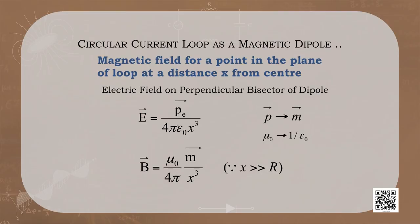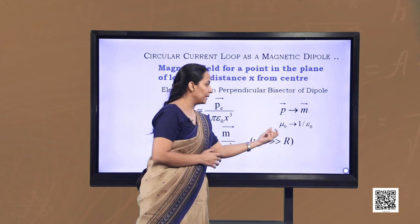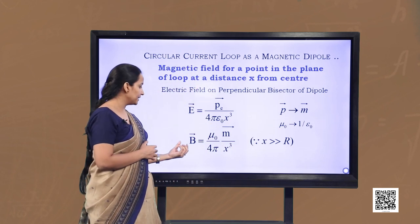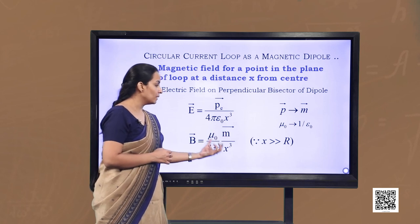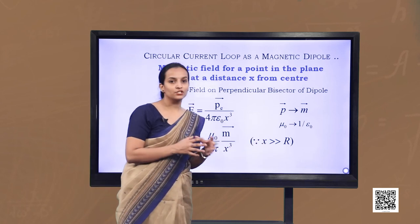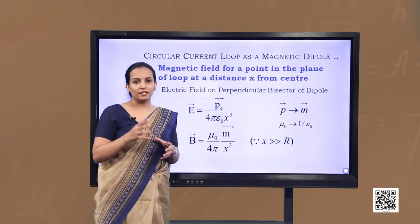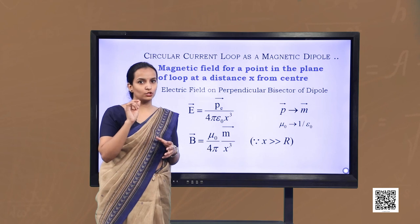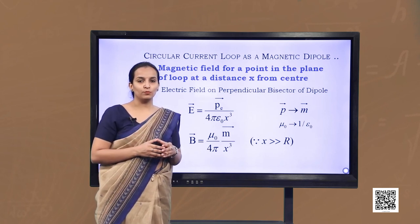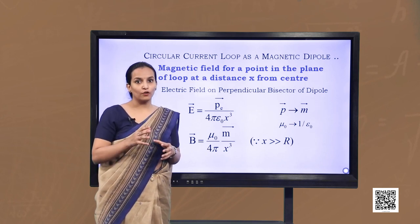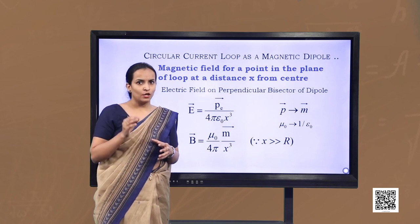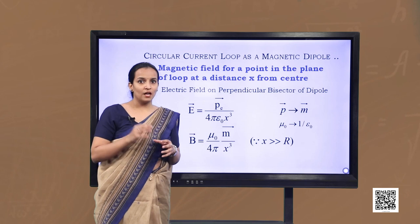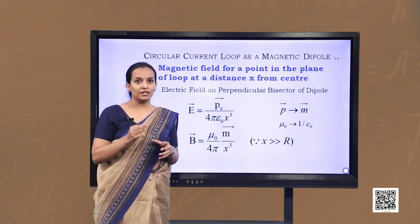Carrying the analogy further, the electric field on the perpendicular bisector of the dipole is E = pₑ / (4πε₀x³). Writing p as m and 1/ε₀ as μ₀, we get B = (μ₀/4π)·(m/x³), again for x much larger than the loop radius. These results apply to any planar loop, confirming that a planar current loop is equivalent to a magnetic dipole of moment m = i·A, analogous to the electric dipole moment p.